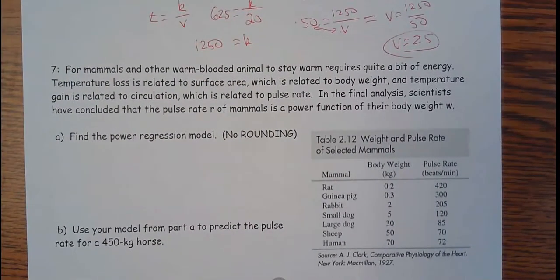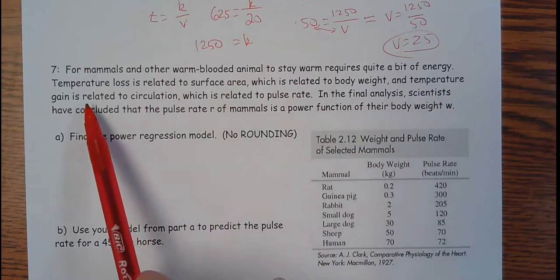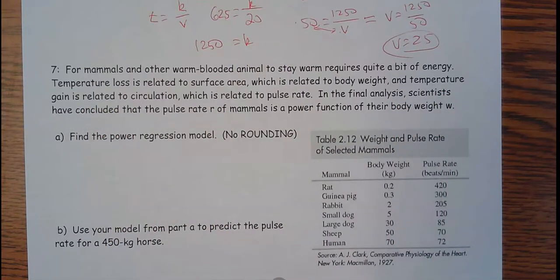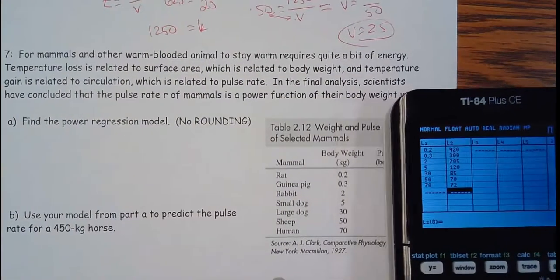Look at this data. For mammals and other warm-blooded animals, to stay warm requires quite a bit of energy. Temperature loss is related to surface area. The more surface area you have, you have more to lose. But it's related to body weight, and temperature gain is related to circulation, which is related to pulse rate. So in the final analysis, the scientists concluded that the pulse rate, R, of mammals is a power function of their body weight. So I'm going to try to find that power function. I'm going to put the data in my calculator. So you probably want to pause it here and put the data in. Put that data in the calculator, and I'm going to do a power function.